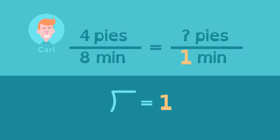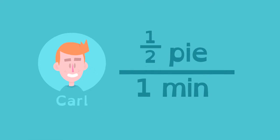Since a unit equals one, we know we need to divide eight into eight to get one. To keep the fractions equivalent, we must also divide four by eight. Now we can see Carl's rate per minute. Carl's unit rate is half a pie per minute.